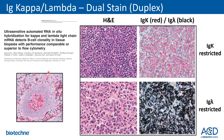IG kappa and lambda can also be performed in a duplex format, allowing for clear-cut evaluation of light chain restriction on one slide. The same group from Cleveland Clinic published on this duplex assay using red for IG kappa and black for IG lambda. An example of an IG kappa-restricted lymphoma shows the predominance of red signal and near-complete absence of black, while a lambda-restricted example shows all black and essentially no red — making the assay easier to interpret on a single slide.